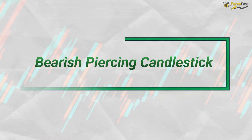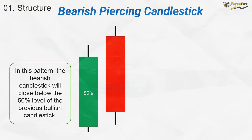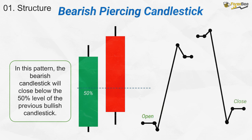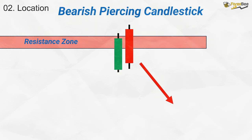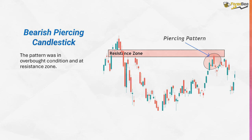Let's now discuss the bearish piercing candlestick pattern. This pattern is made up of two candles. The first is a strong bullish candle, followed by a bearish candle that opens with a gap up, but closes below the midpoint of the previous bullish candle. The bearish piercing pattern signals a potential bearish reversal and typically forms at a resistance or supply zone where the prior bullish momentum starts to weaken. In the example, we can see the bearish piercing pattern forming at a resistance zone, followed by a downward trend as the market reverses.